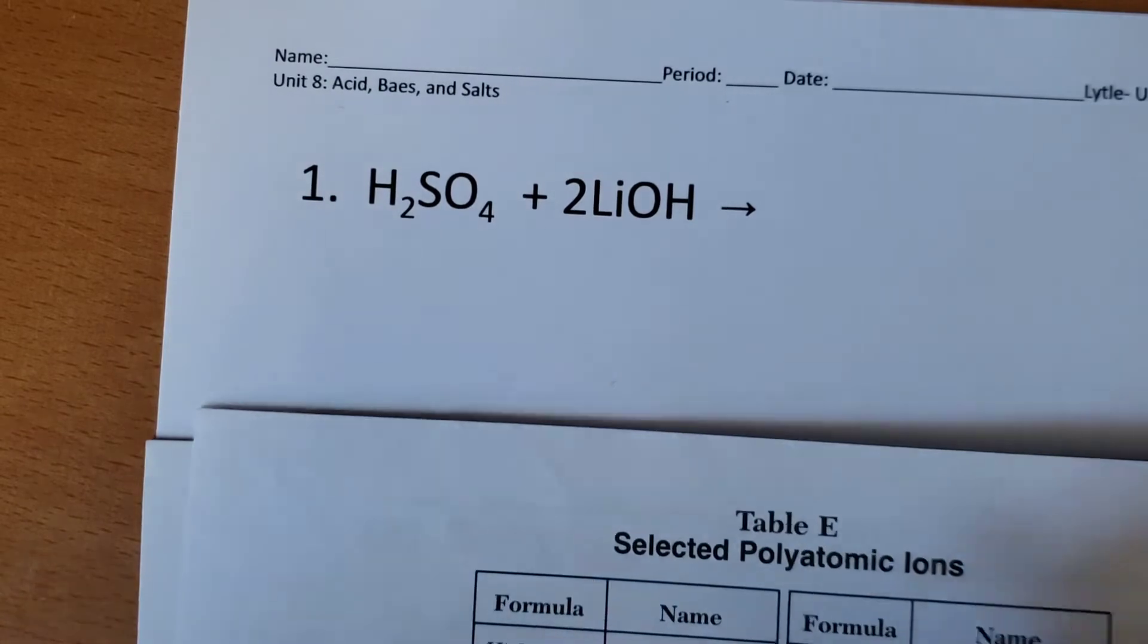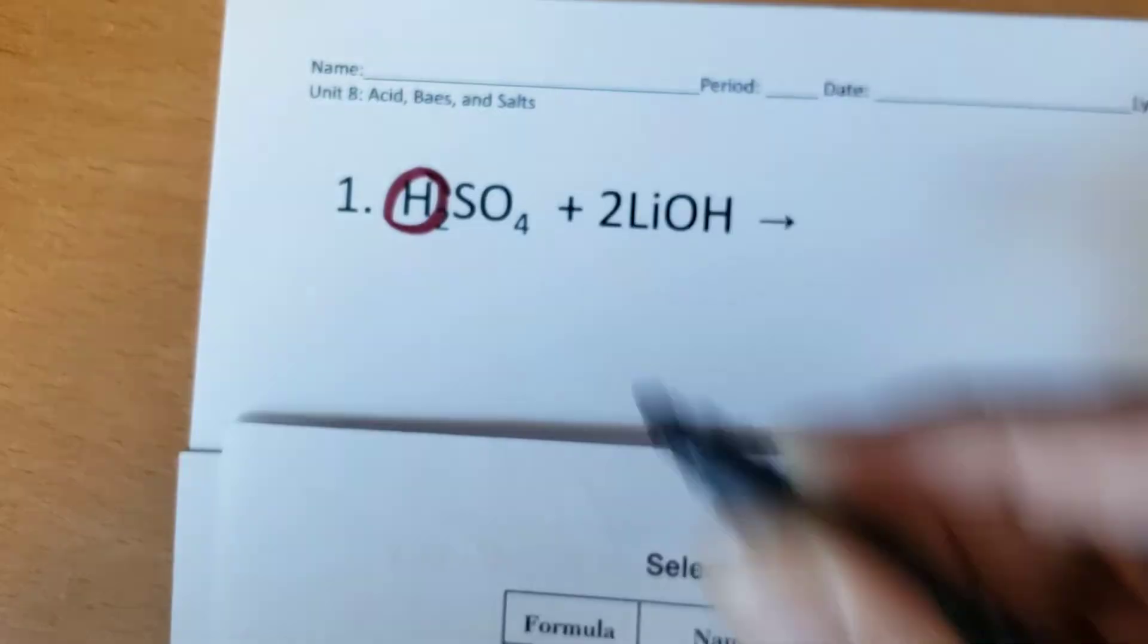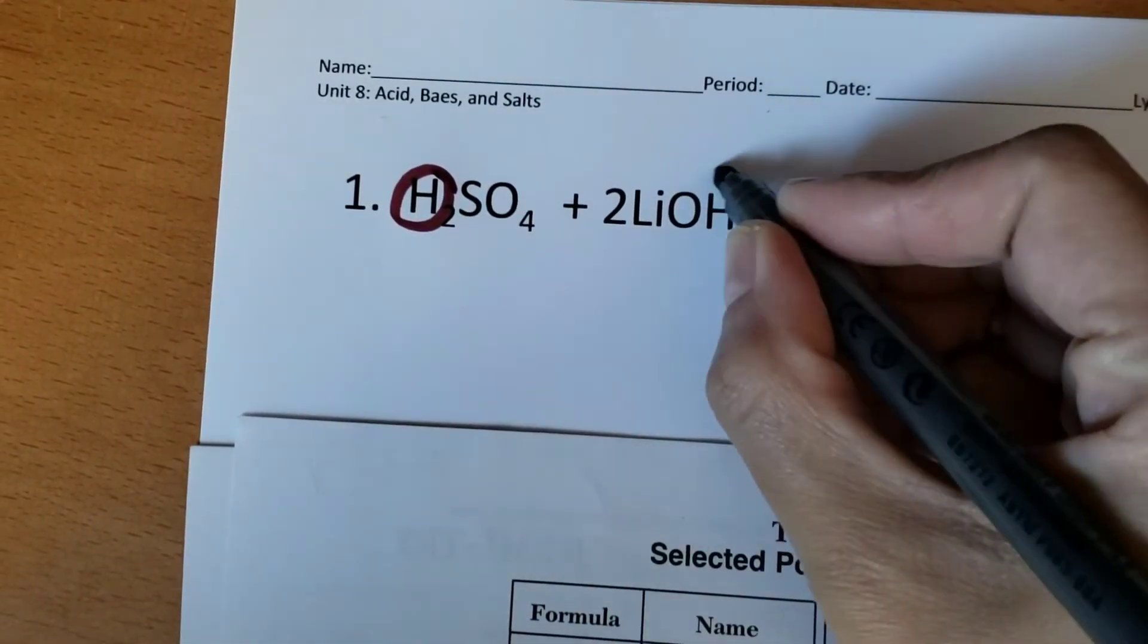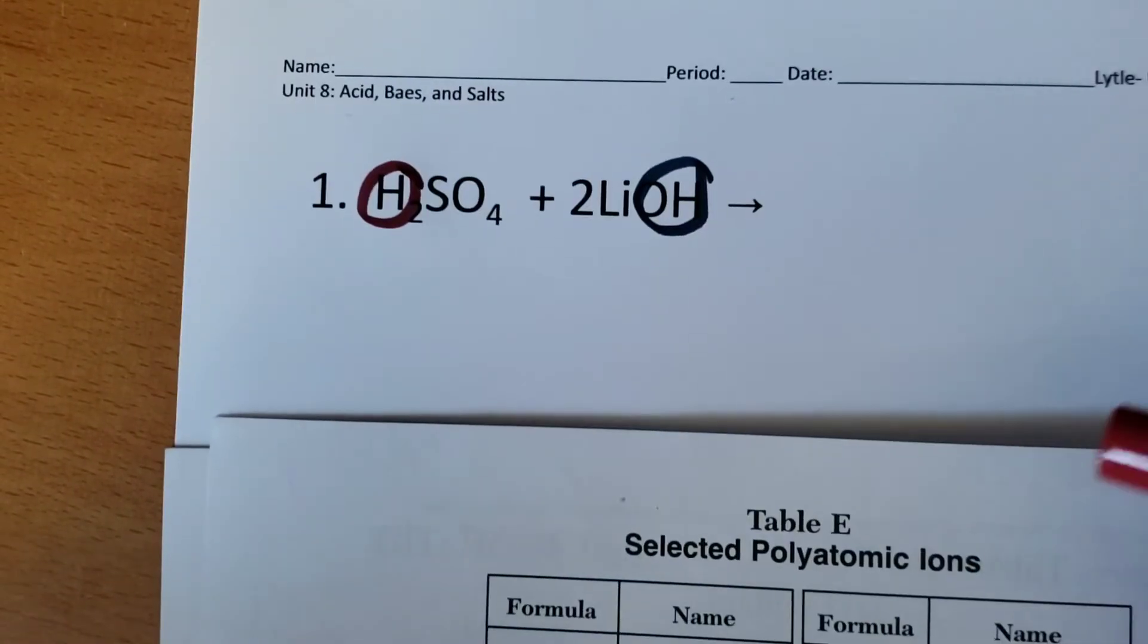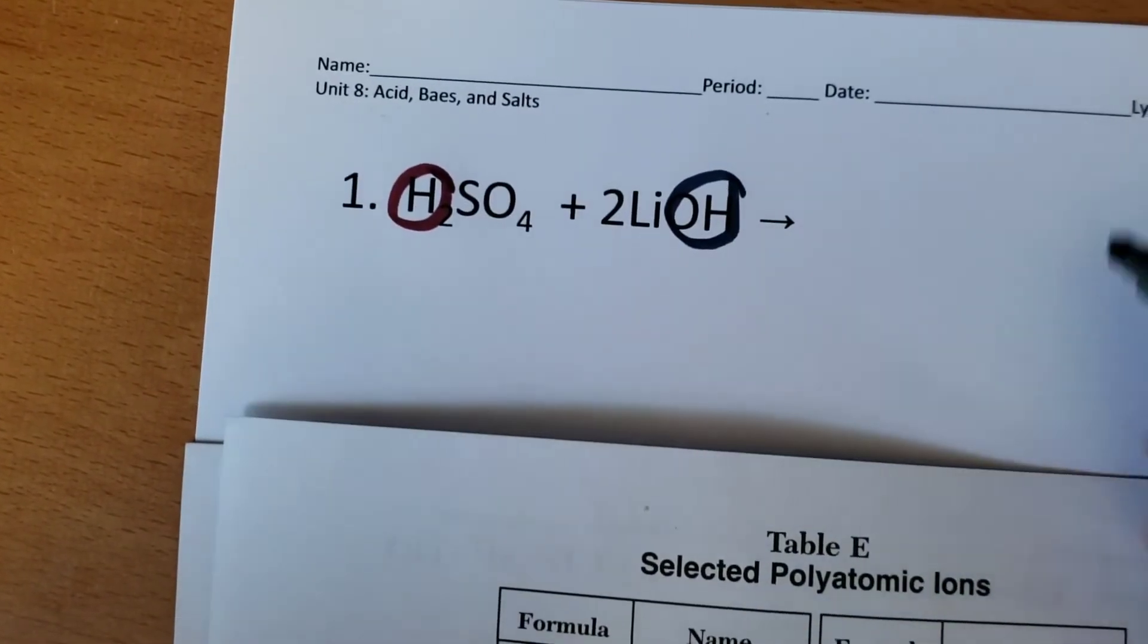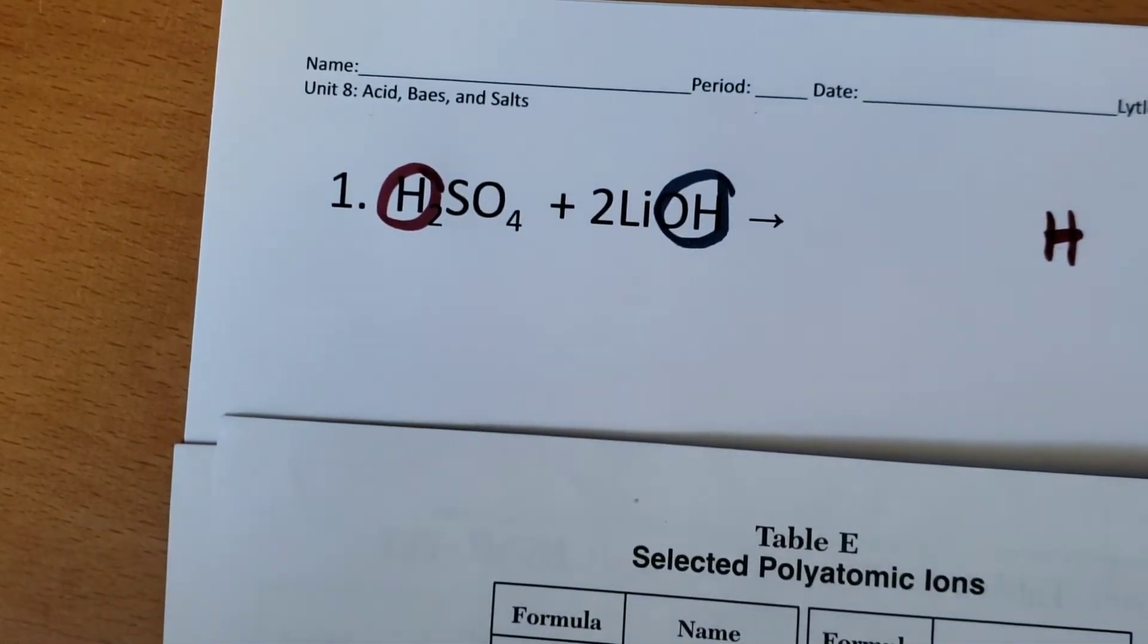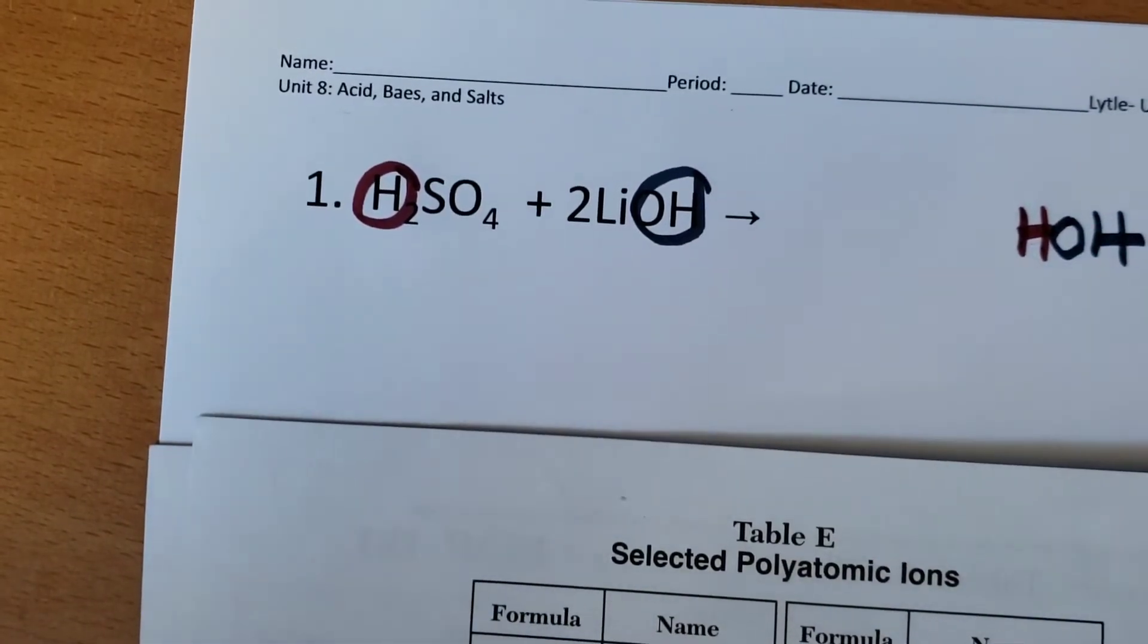So what we know is that the hydrogen of the acid will combine with the hydroxide of the base, and they will make water. So on the product side, I'm going to write HOH. So water, H2O, can be written as H2O or HOH.